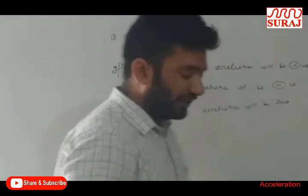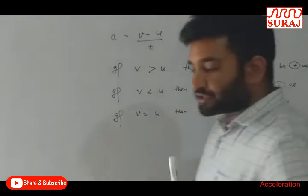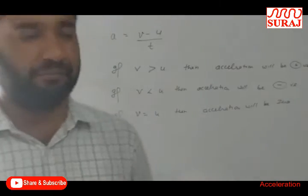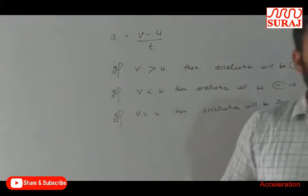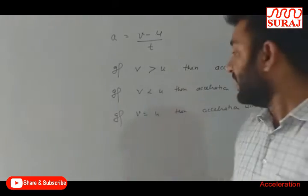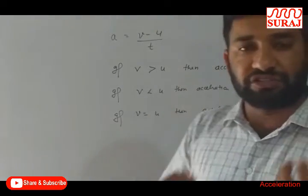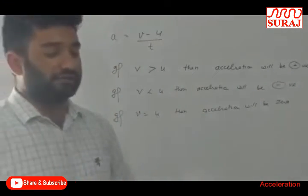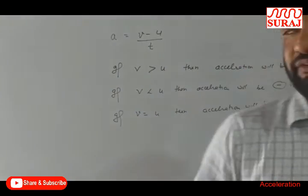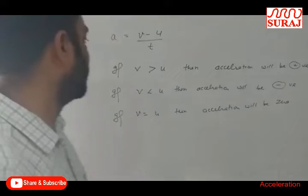If v is equal to u, it means that the initial and final velocities are the same, so the body is moving with a constant velocity — velocity does not change with respect to time. That is why v = u, and if there is constant velocity then acceleration will be equal to zero. These are the conditions for when acceleration is positive, negative, and zero.